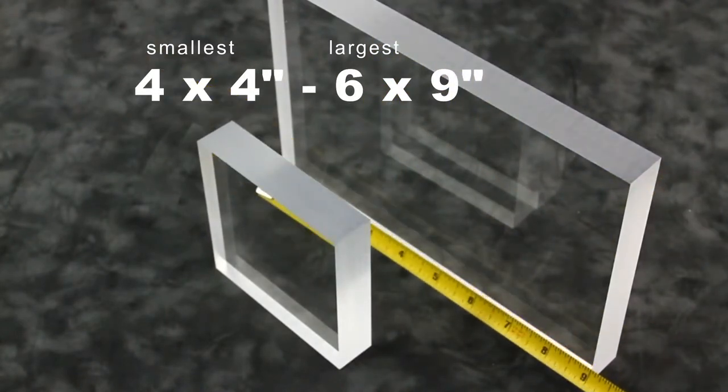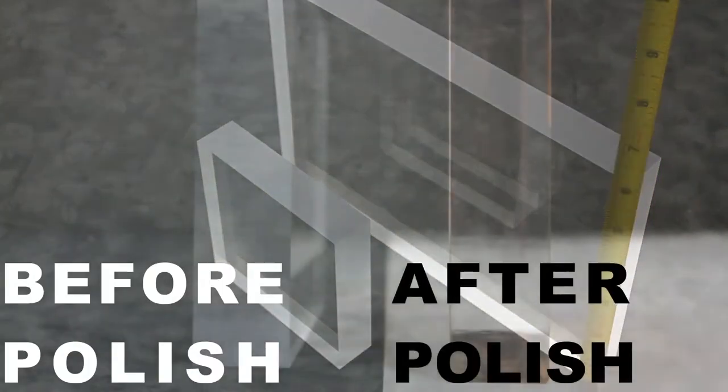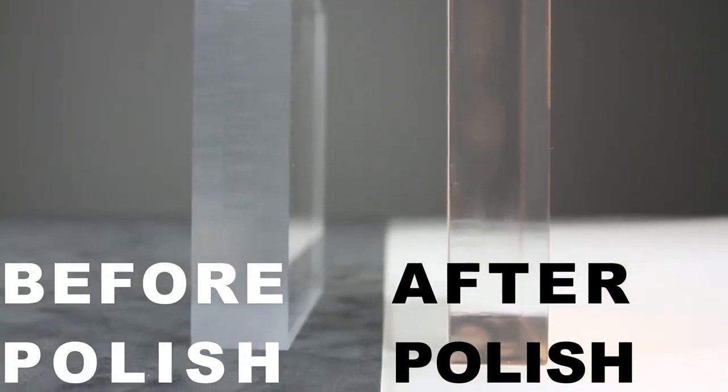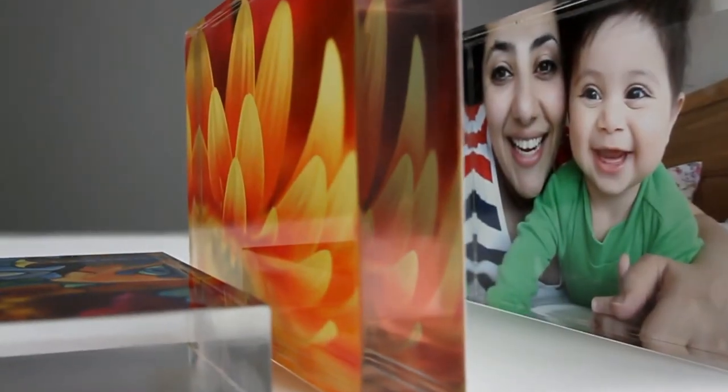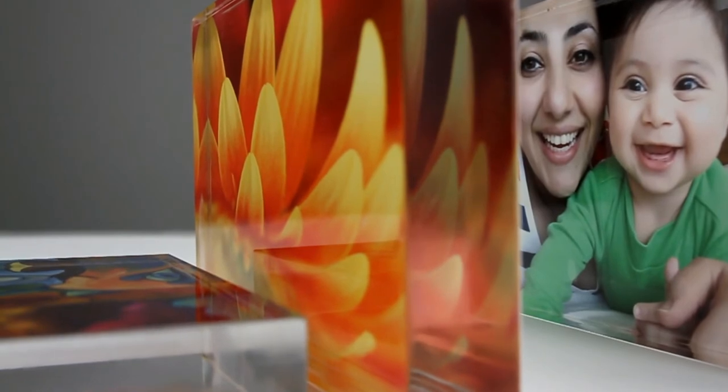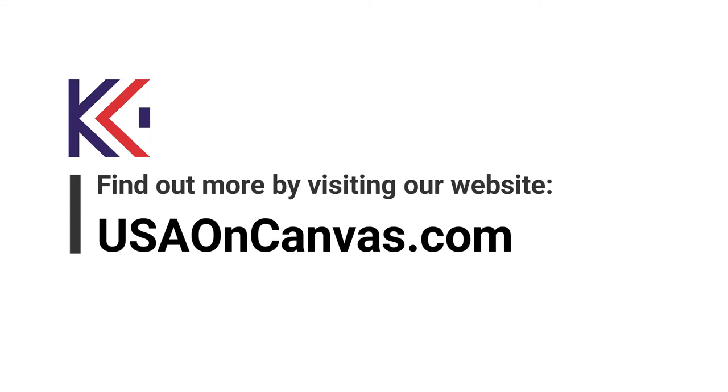These one-inch thick acrylic blocks are finished with hand-polished, crystal-clear edges. Acrylic blocks add depth to your digital images. These ready-to-display glossy acrylic blocks are perfect for customized gifts. For more information, visit USAonCanvas.com.